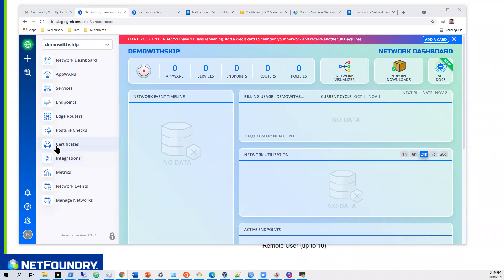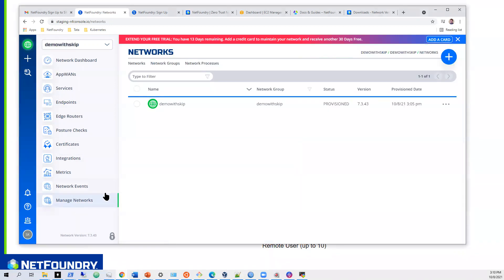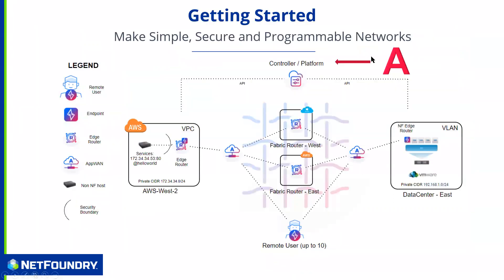Our network has been created. You'll notice there's a green globe up here indicating the network is completed — it says 'Manage Networks' and it's provisioned. So we have created our controller and we have platform access. Now we need to build the middle transit fabric routers. You really want to build these where your users are, your cloud is, your data center — in those regions, you can pick any cloud.